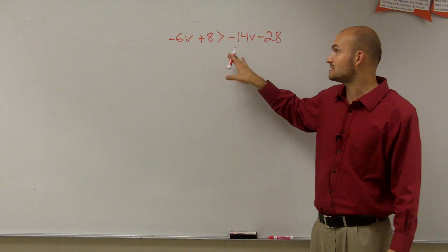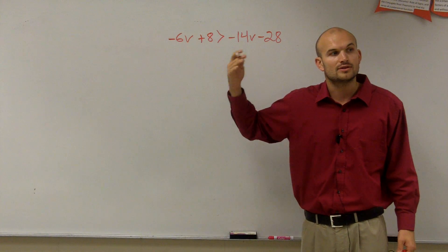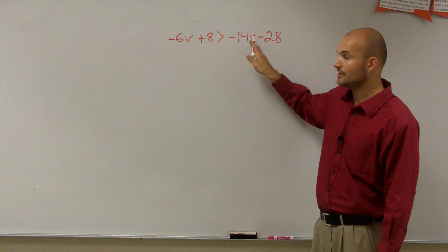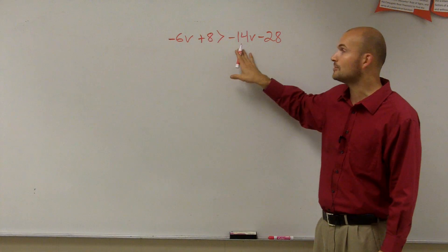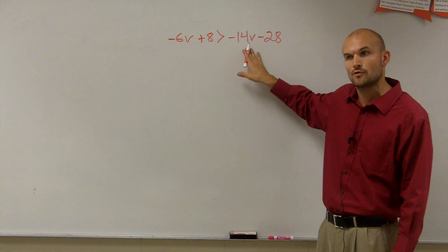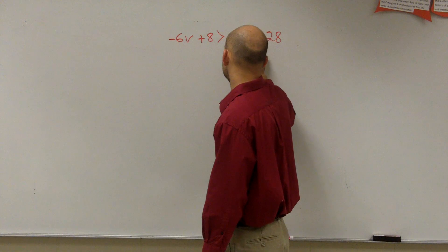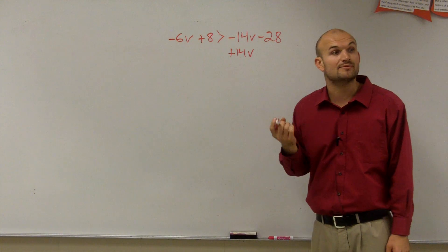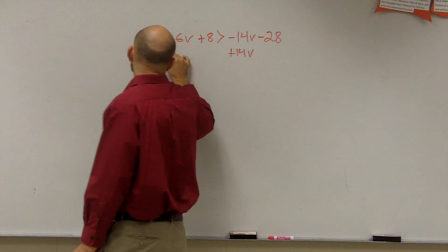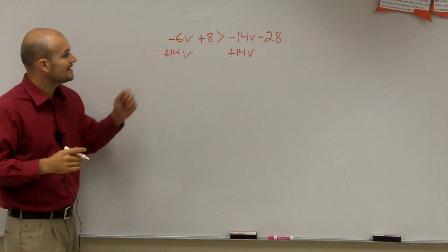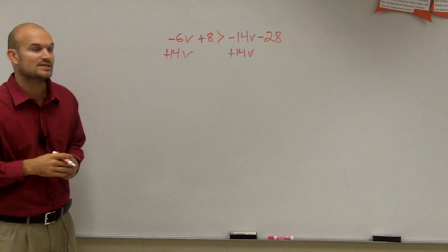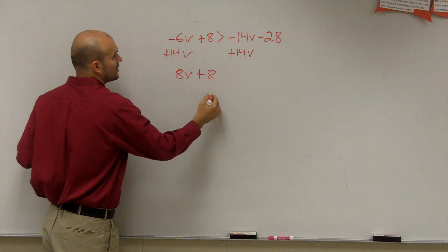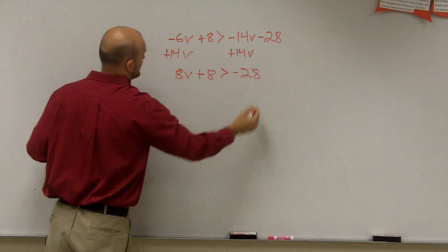So to do that, what I can do, what I like to do, is I like to get rid of the smallest of the two coefficients of the variables. Since negative 14 is smaller than negative 6, I'm going to get rid of this negative 14v. To do that, I'm going to add 14v. Okay? Because negative 14v plus 14v is going to give me 0v. I'll add a 14v to the other side. And I get negative 6v plus 14v is going to give me 8v plus 8 is greater than negative 28.